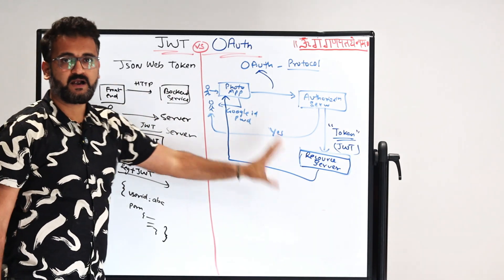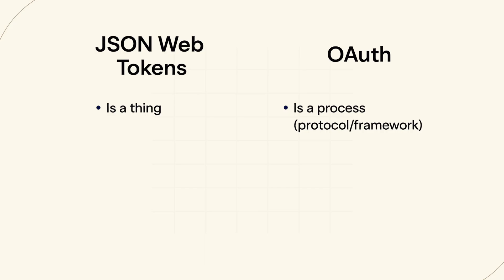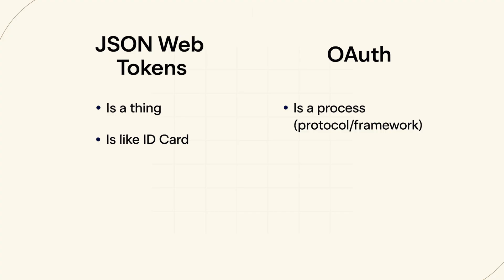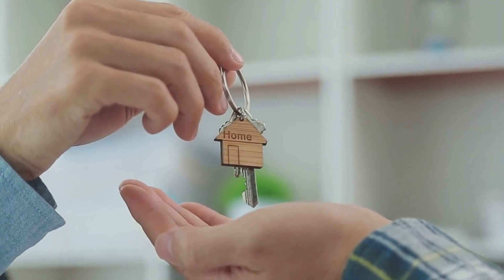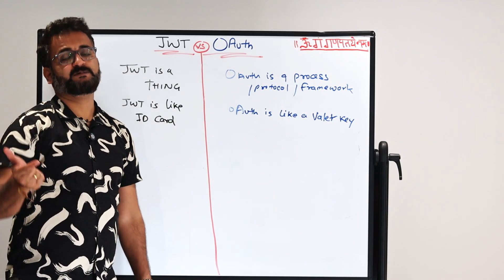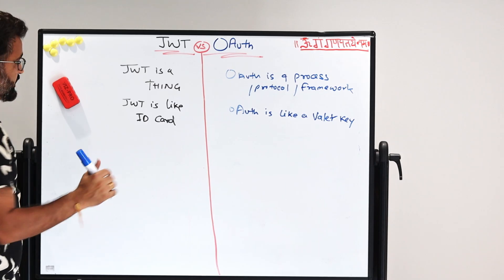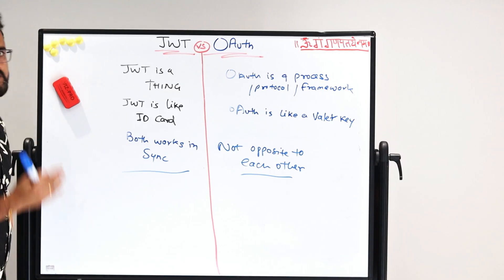This is the basic difference between JSON Web Token and OAuth. To summarize: JWT is actually a thing — a token which gets passed. OAuth is a process, protocol, or framework. A second difference is that JWT is like an ID card — that card has all the information, and the moment anyone scans it, they know what access this card has: who is the user and what they can do. Whereas OAuth is like a valet key. When you go to a hotel, you give your valet key to the driver to drive the car, but you don't give them all your other keys — you only give the key required to do that specific job. So OAuth is very good at that. JWT can be used in OAuth, and OAuth can have JWT as a token, but both work in sync — not opposite to each other.